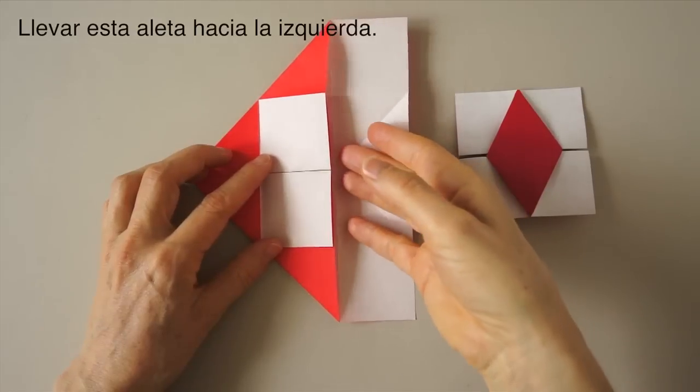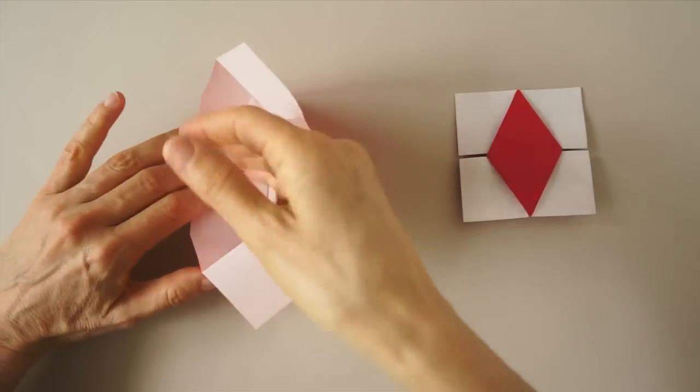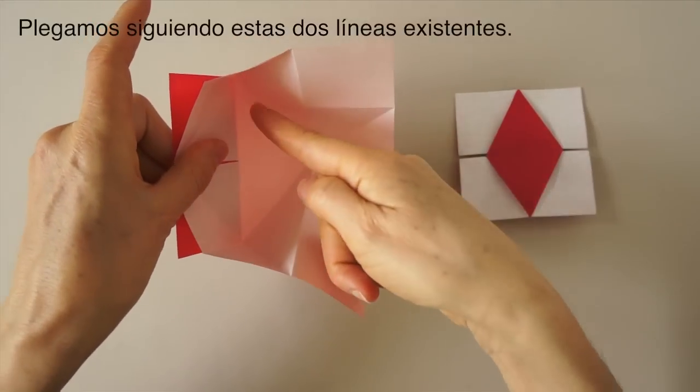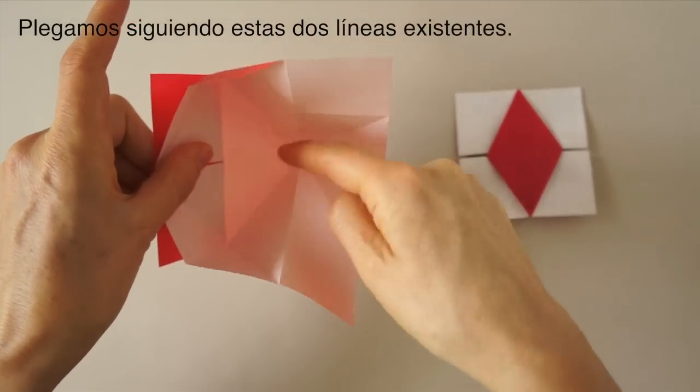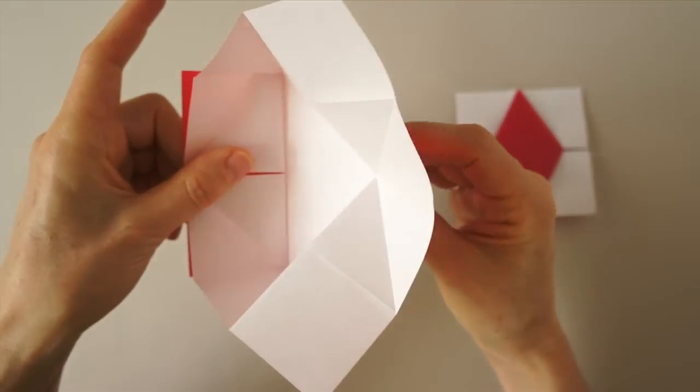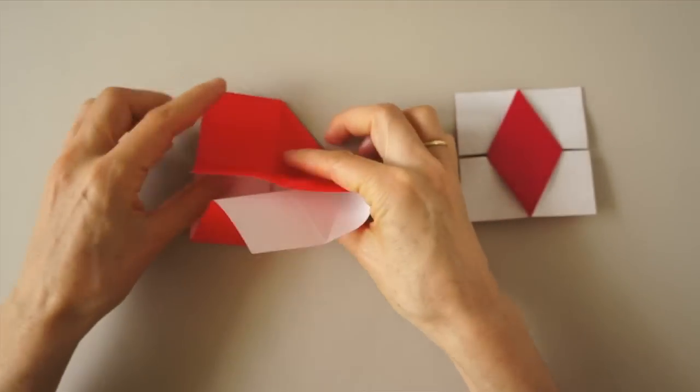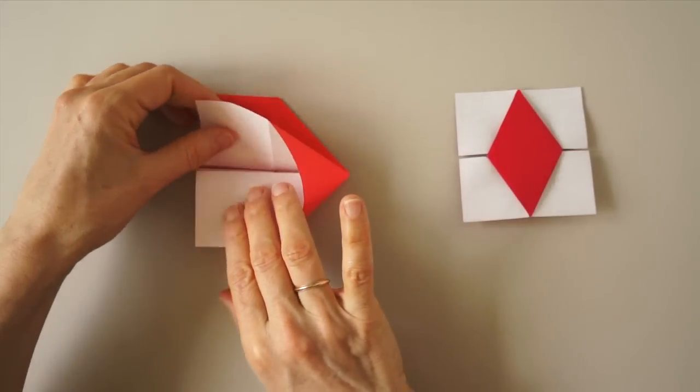Now, we bring this flap over to the left. We're going to focus on these two folds and fold on those lines from behind, and collapse.